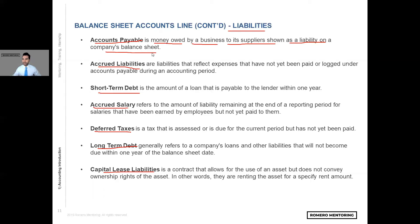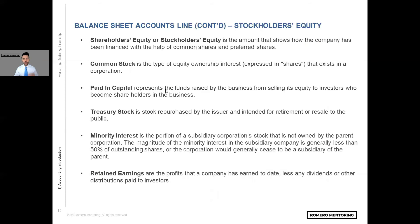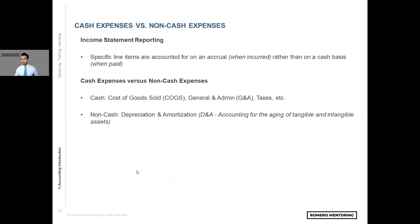On the stockholders' equity portion of the balance sheet, we have common stock, paid-in capital, treasury stock, minority interest, and retained earnings. This represents the ownership and how much the company has earned in profits over a cumulative period of time. Again, familiarize yourself with these definitions because they're going to be very helpful once we jump into financial modeling in module number one.